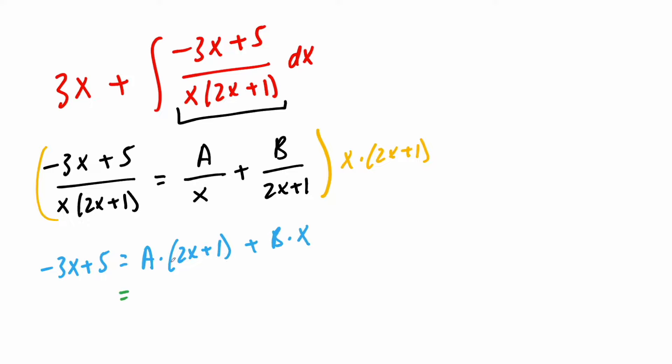And then we're going to expand. So 2x times a, we get 2ax, 1 times a, so plus a, plus bx. And now we're going to create two systems of equation.